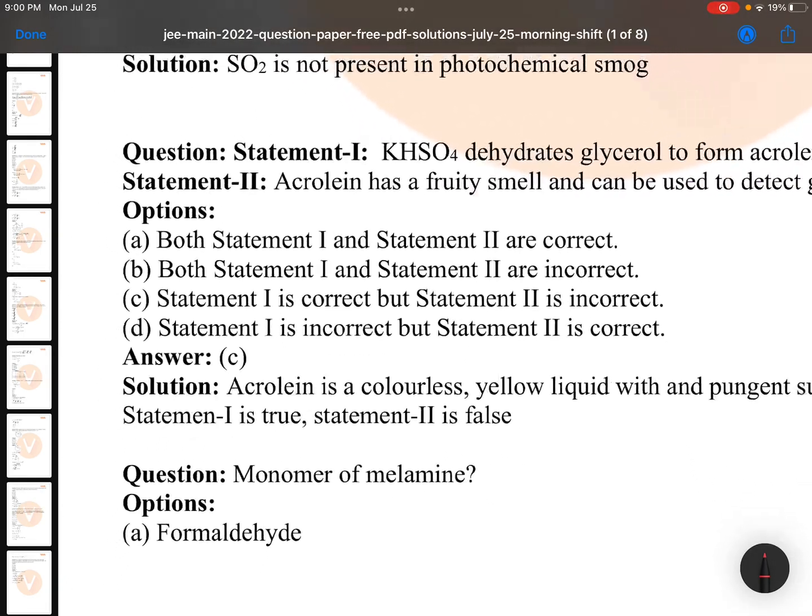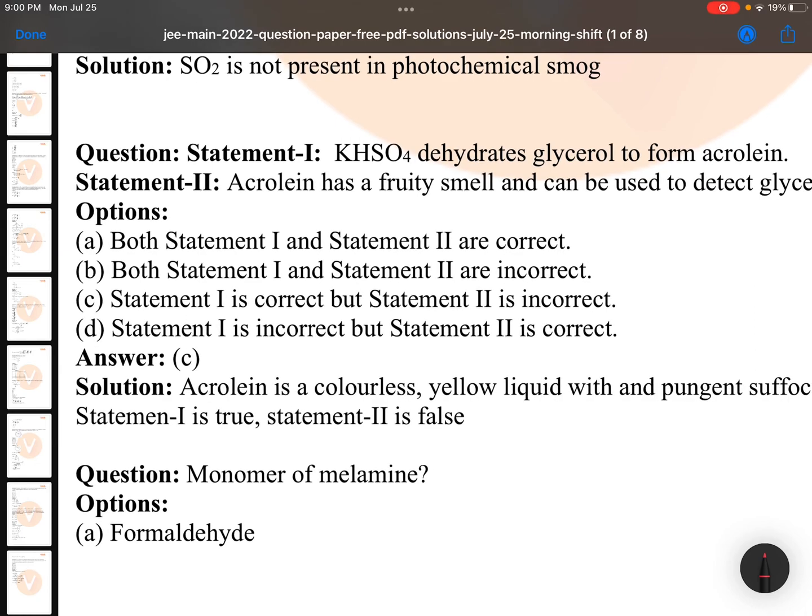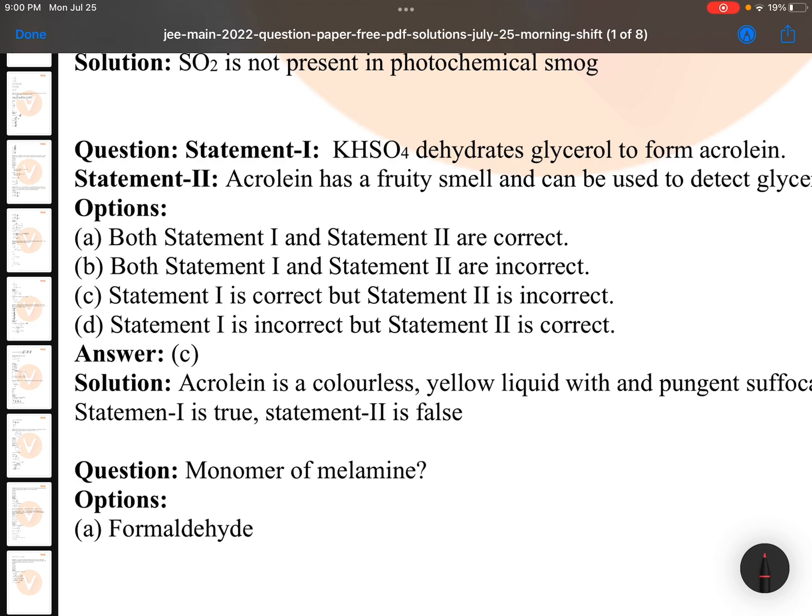KHSO4 dehydrates glycerol to form acrolein. Acrolein has a fruity smell and can be used to detect glycerol. The first statement is right. KHSO4 is a dehydrating agent, it is sulfuric acid. So it forms acrolein. That is right statement.